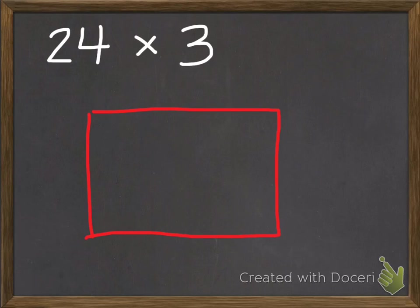So what we're going to do here, instead of using 24, we're going to break it into tens and ones. So we're going to use 20 plus 4 to break it down into smaller parts. And this part over here can stay 3. So we're going to separate this rectangle into two smaller rectangles.